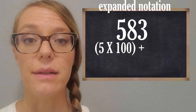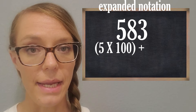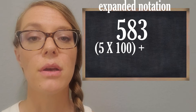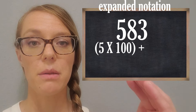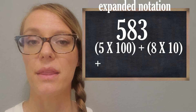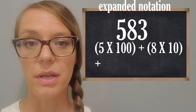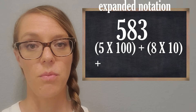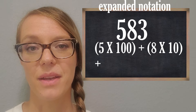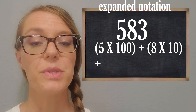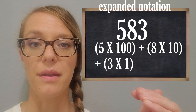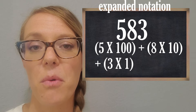Now let's do it with the eight. Think about the place value — it's in the tens place, and we have eight groups of ten. We put that in parentheses: eight groups of ten. Then another plus sign, and we think about the three. It's three groups of one, written in parentheses. Great job — you just learned expanded notation!